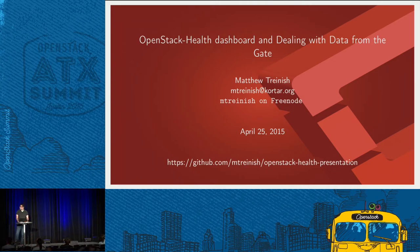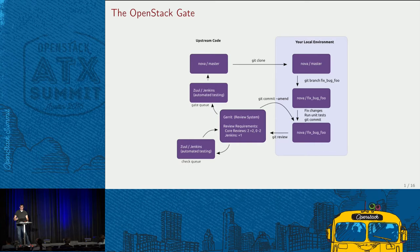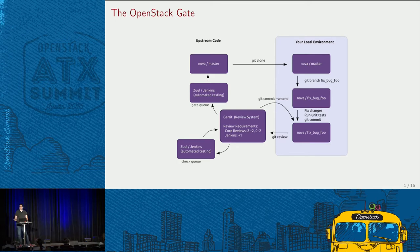I'll spend a little more time on the first couple of slides. This picture, which everyone has probably seen before, is the basic workflow for interacting with code submission, code review, and getting changes merged in OpenStack. You clone a repository, make your local change, push it up to Gerrit, the test system runs, you iterate until it gets approved by core reviewers, the testing passes, and then the change merges. It's all automated.